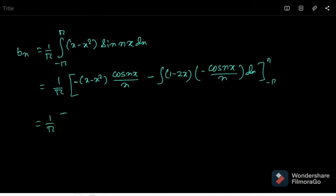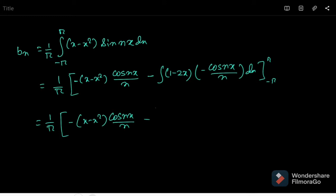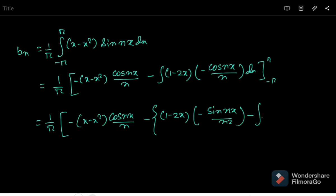We get (1/π) times: minus (x minus x²) cos(nx)/n, then the next integration with (1 minus 2x) and minus cos(nx)/n gives sin(nx)/n². Then we differentiate again: derivative gives minus 2, and we integrate sin(nx)/n² giving minus cos(nx)/n³.